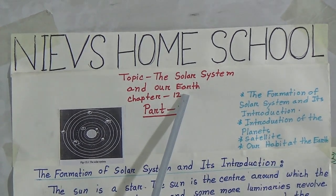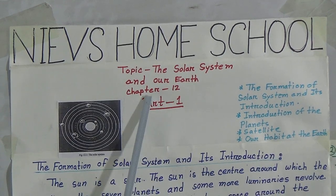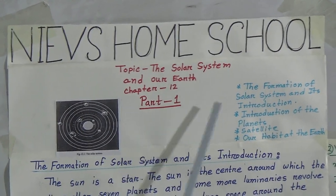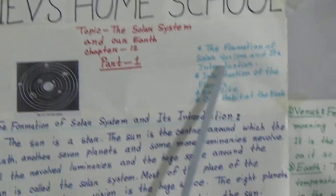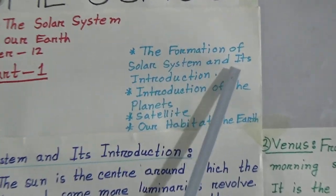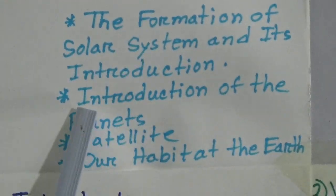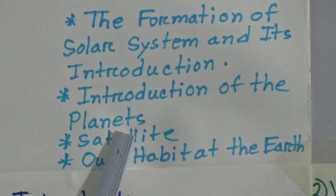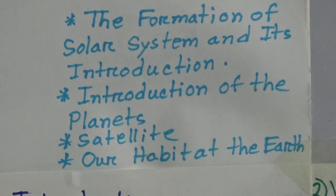Our topic is the solar system and our earth. This is chapter 2 in your book. Today I will discuss part 1. In part 1, I will discuss the formation of the solar system and its introduction, introduction of the planets, satellite, our habitat, and the earth. So let's start today's class.